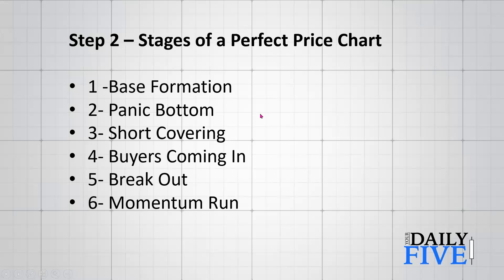Step two: let's look at the stages of a perfect price chart. Stage one is base formation. Stage two is a panic bottom. Stage three is short covering beginning after the panic bottom. Stage four is buyers coming in. Stage five is the breakout. Stage six is a momentum run. A perfect price chart has these six stages, and each one must be fulfilled - you've got to check off every box in order for it to be the perfect chart.